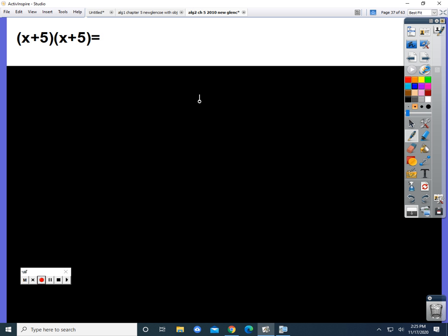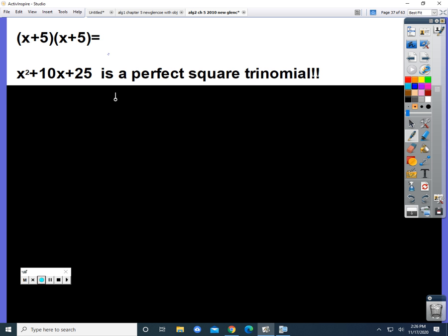Okay, before we get started with completing the square, I'm going to show you what a perfect square trinomial looks like. That would be when the two factors are identical, like these two. If you do first, outer, inner, last, you end up with x squared plus 10x plus 25. It's called a perfect square trinomial.